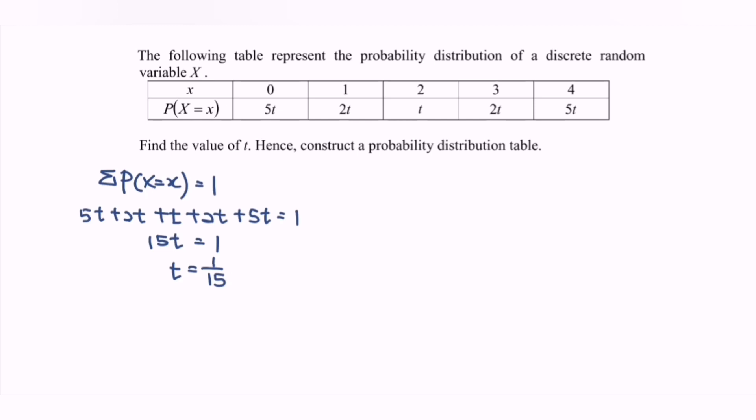Hence, construct the probability distribution function. We have the random variable x with 0, 1, 2, 3, and 4. For the probability, we have to substitute t, which is 1 over 15, into the situation.